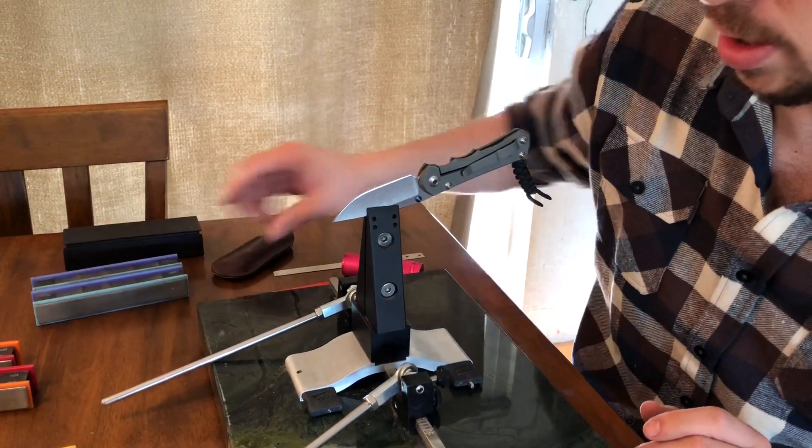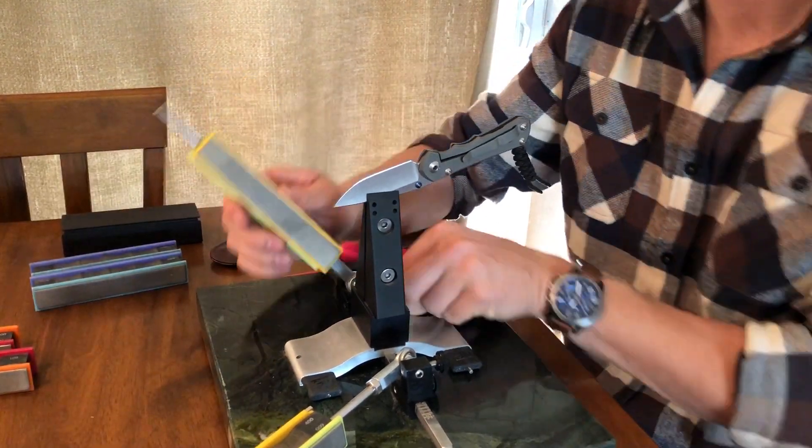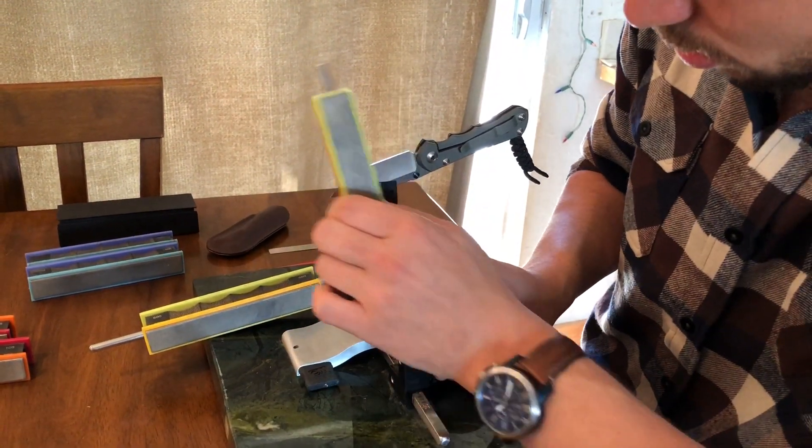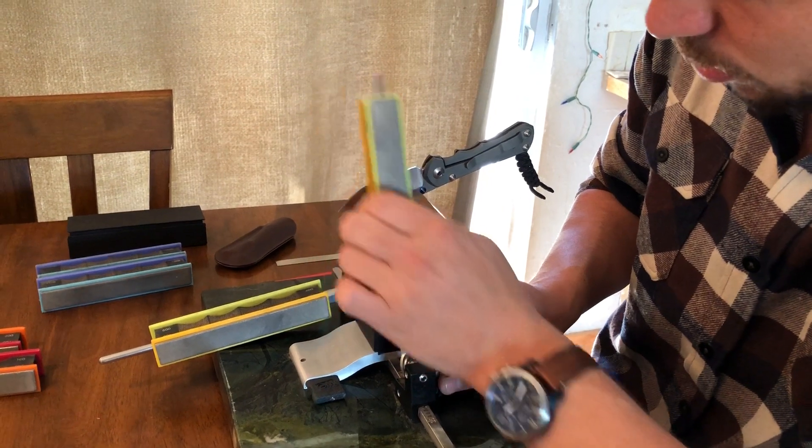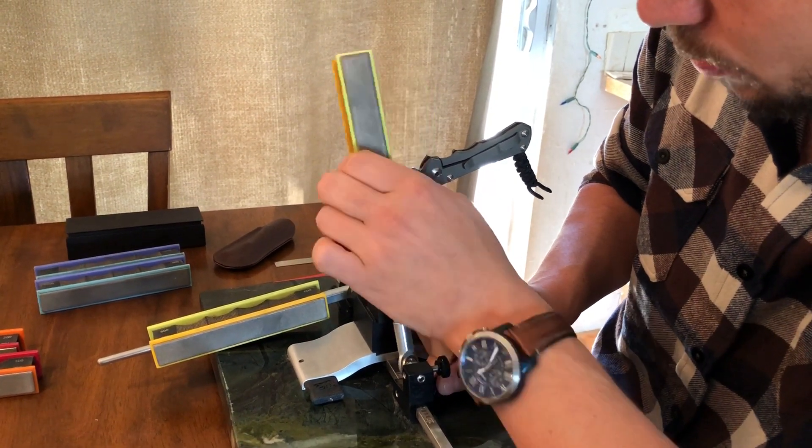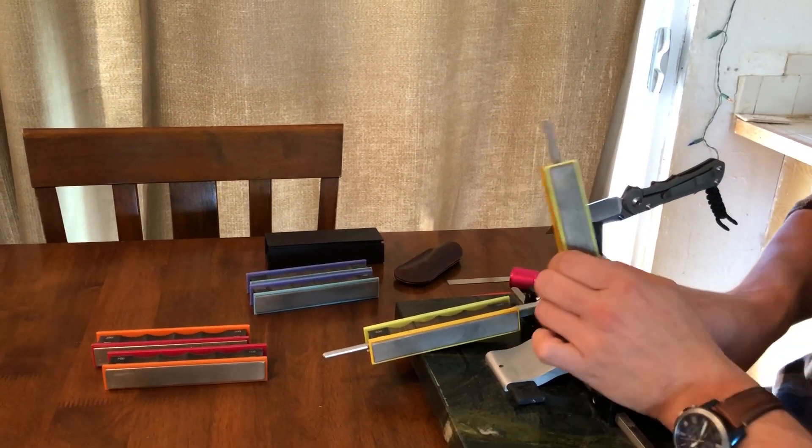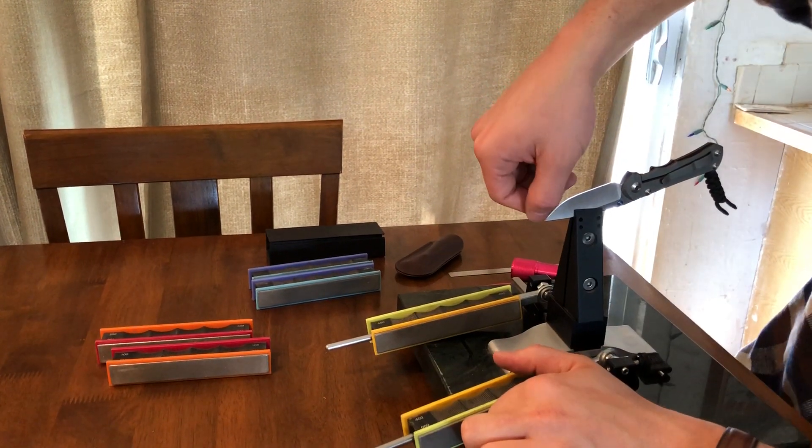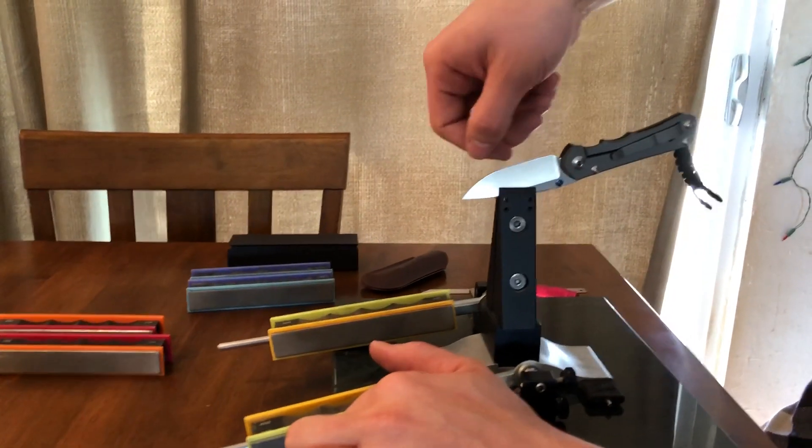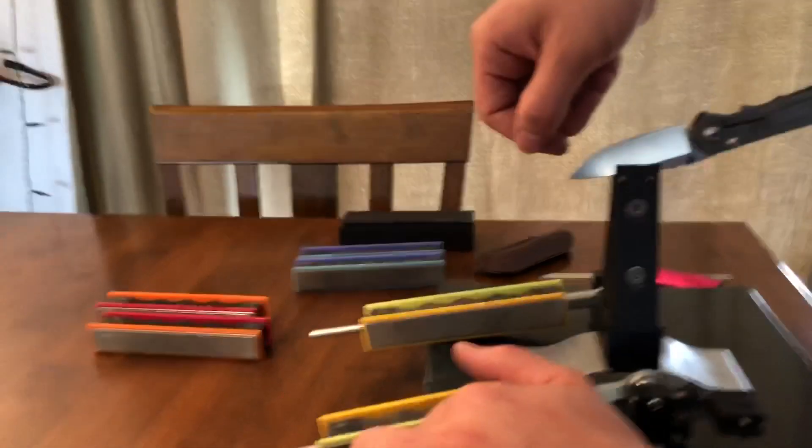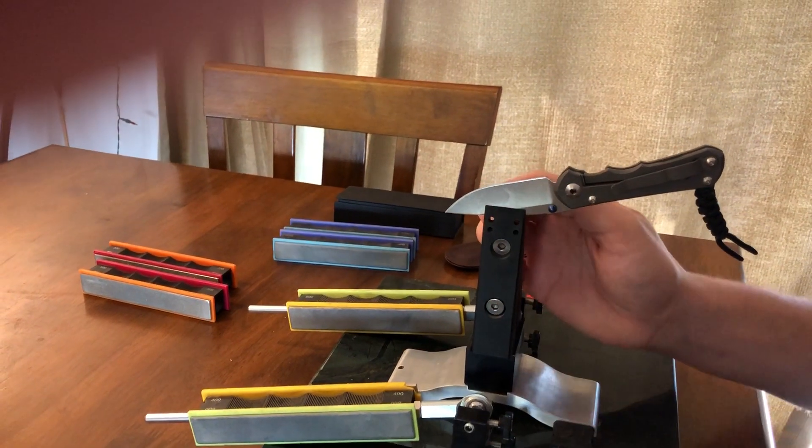This knife's got a pretty close to factory edge on it so I don't need to use a coarse stone so I'm going to start with a 400 grit. I just do some scrubbing like this, an up and down motion until I make sure that all that marker is completely gone. Then I check for the burr and the burr is that small little bit of metal also called a wire edge that curls over from one side to the other and that's what lets you know that the bevel on this side is intersecting with the bevel on the other side.